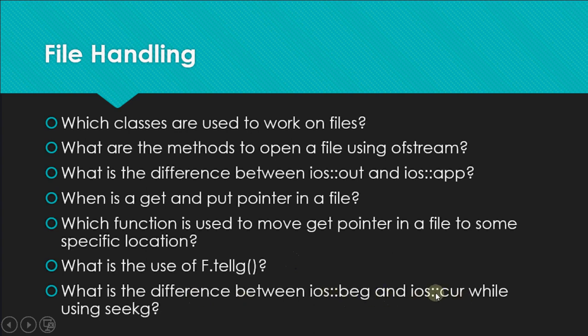What is the difference between ios::beg and ios::cur? These are offsets used with the seek function. If you don't write anything, the default is from the beginning (ios::beg). For example, f.seekg(10) moves to byte 11 (since the first byte is 0). If you write ios::cur, the pointer moves 10 bytes ahead from its current position. If you write ios::end, you give a negative value like -10 to move back from the end. These offsets apply to both seekg() and seekp().